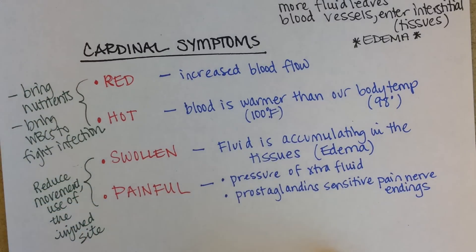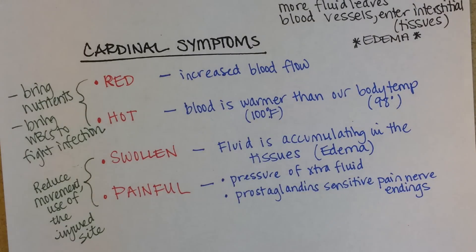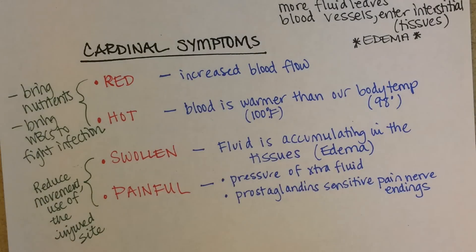It can go too far though, and chronic inflammation is actually known to be involved in many diseases. For example, heart disease — chronic inflammation in the blood vessels seems to set the stage for atherosclerosis and then eventually heart disease. So that's the question.